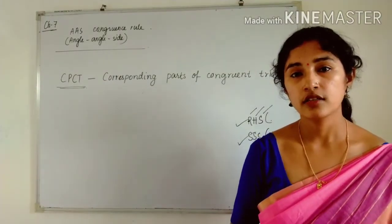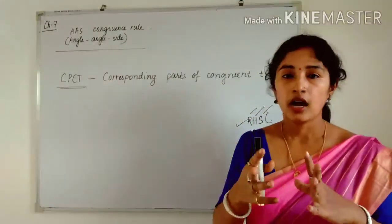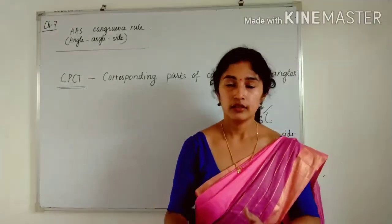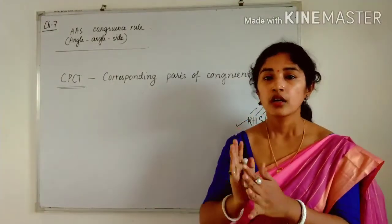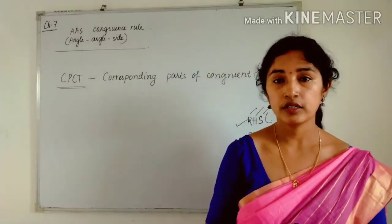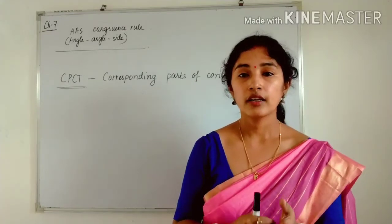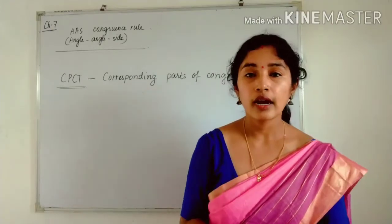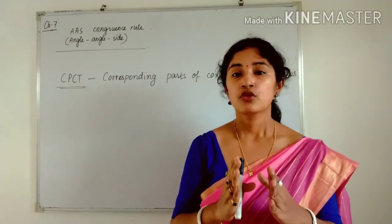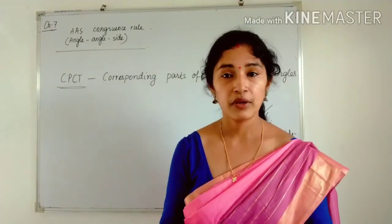Using the three criteria — SAS, ASA, and AAS — we can prove the questions in Exercise 1. Regarding CPCT: if in a question they ask about the remaining parts of the triangle after proving congruency, we use CPCT. We cannot use CPCT directly — it can only be used once the triangles are proved congruent. First prove congruency, then by CPCT the remaining parts are equal. Those remaining parts may be angles or sides.